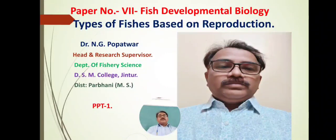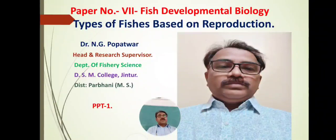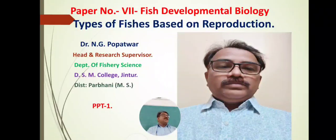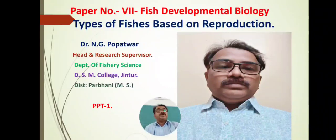Section A is Paper Sixth: Fish Disease Management. Section B is Paper Seventh: Fish Developmental Biology. Fish Developmental Biology, Paper Seventh, is divided into four units — Unit First, Unit Second, Unit Third, and Unit Fourth. We have started the first unit today. In this first unit, the first article of Paper Number Seventh, Fish Developmental Biology, the first point is the types of fishes based on reproduction.